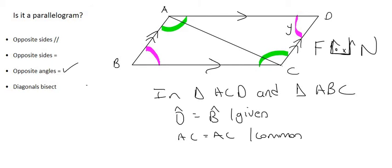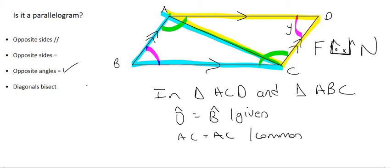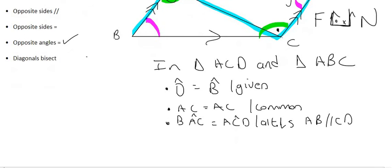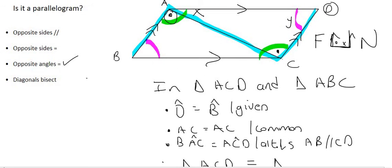Now that we've proven those lines are parallel, we can go back to our congruency. We can now spot the Z-shape, meaning this little angle equals that little angle. So angle BAC equals angle ACD, and the reason is alternating angles — because AB is parallel to CD. So we now have three things for our congruency proof.